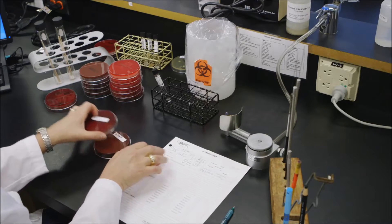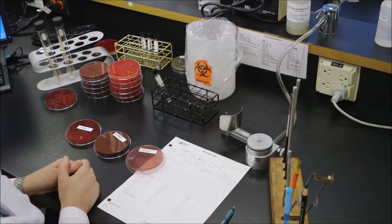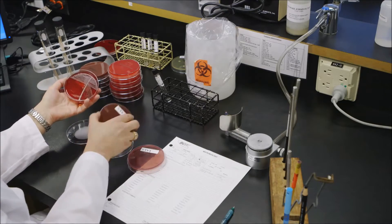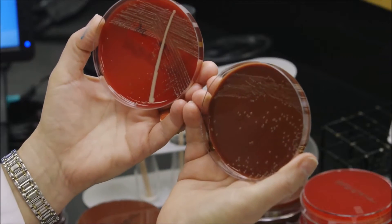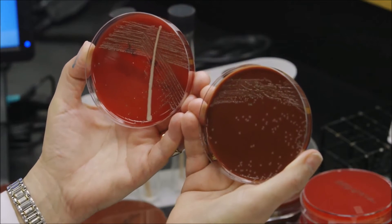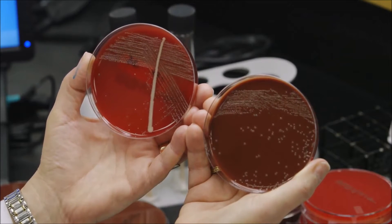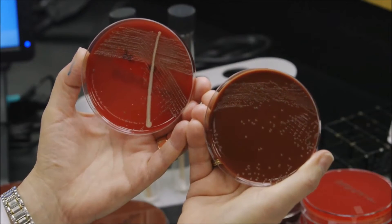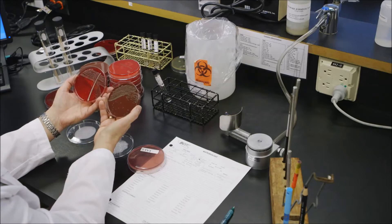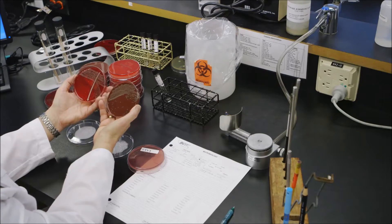The first thing I do is put the plates side by side in front of me and I always lift up the blood and the chocolate side by side and that's to compare the growth requirements. Remember that Haemophilus requires enriched conditions, not only the media but the CO2 and it doesn't grow well on a blood agar plate without the help of a staph streak.